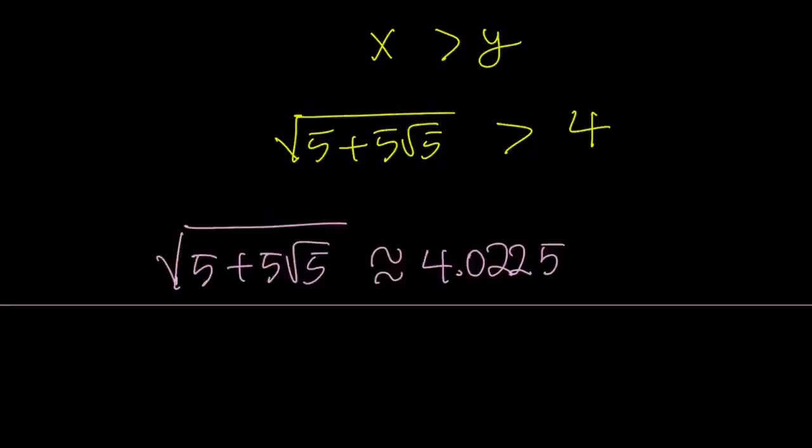So, here's the numerical value of the square root of 5 plus 5 root 5. It's about 4.0225. And, as you can see here, it's slightly larger than 4.